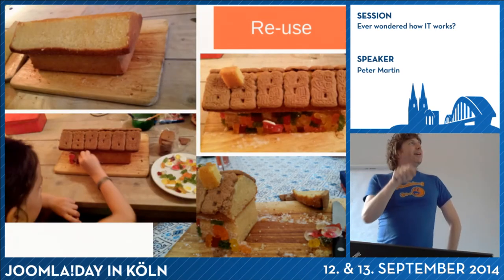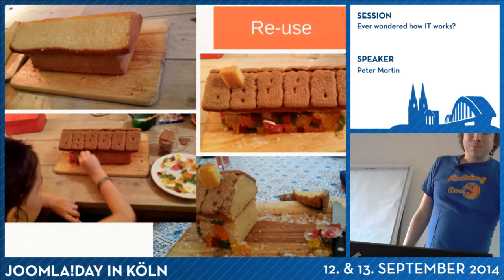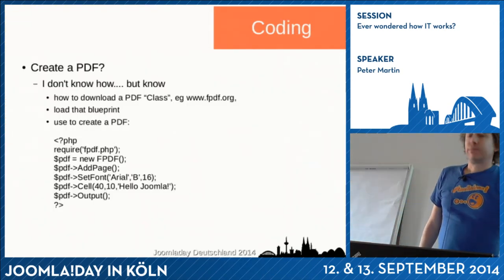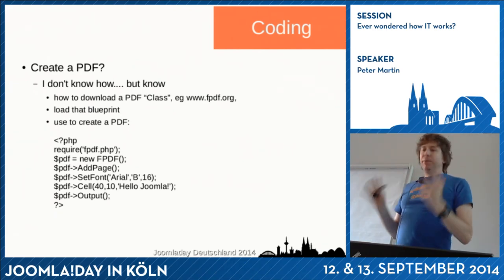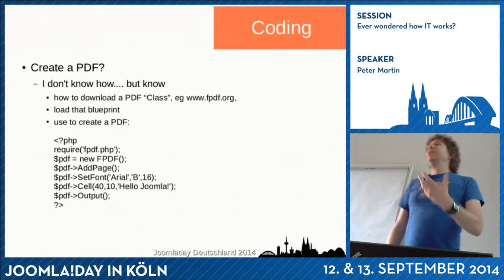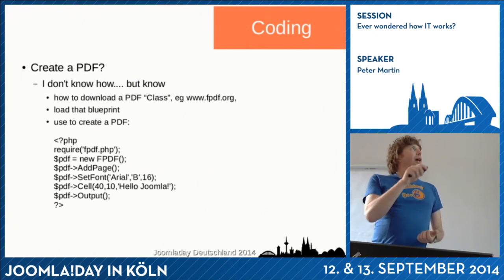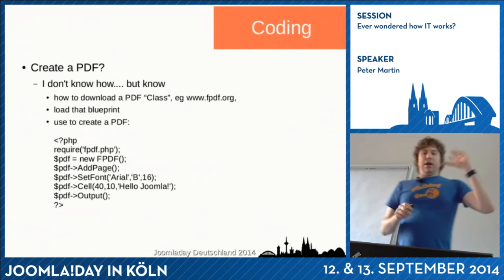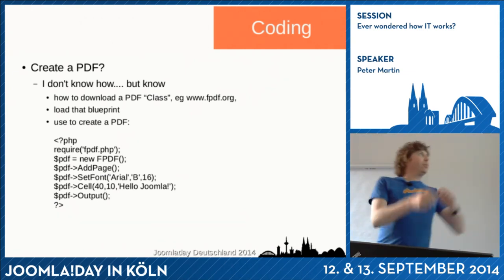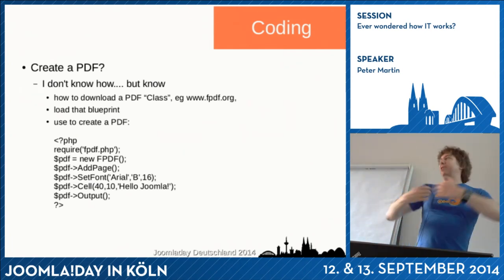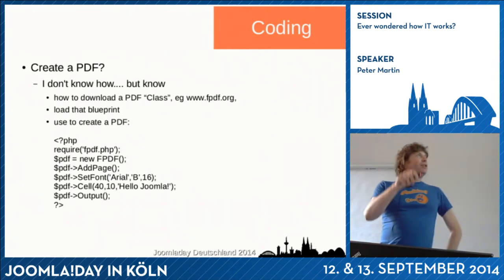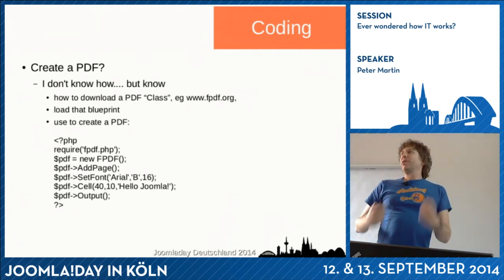This is the cake, and this is the result — and this is what was left after the party. This is how object-oriented programming works. And if you look at coding: I don't know how PDFs are created, but I know where to download a PDF class, and I know how to instantiate it. I require it, then I say I want a new object of this PDF class. I add a page, add some fonts, say 'Hello Joomla,' put some text in it, and with one output command the PDF is created. I don't know the inner working of the PDF class — I just use it with this kind of code. This is object-oriented programming.